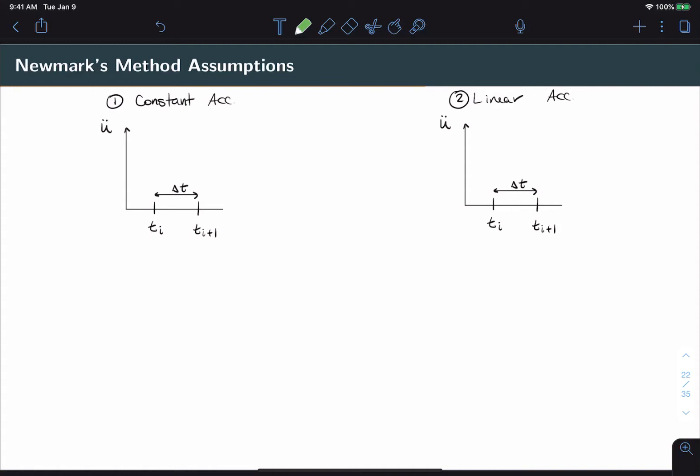In this case I'm going to plot the acceleration trajectory. So at time ti we have a known acceleration u double dot i. At time ti plus one we have an unknown acceleration, which we call u double dot i plus one. The assumption Newmark's method makes here is that in between these two the acceleration is going to be constant and average, lying somewhere between those two points.